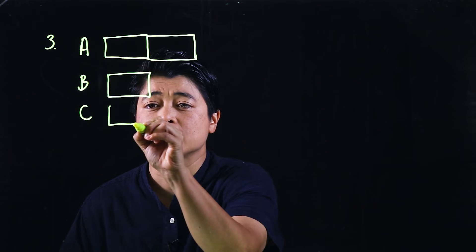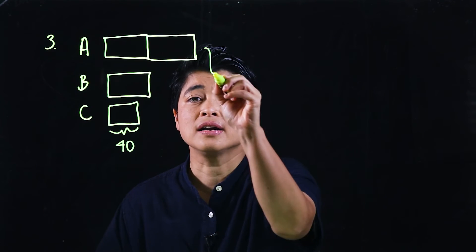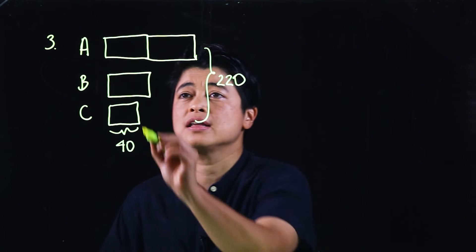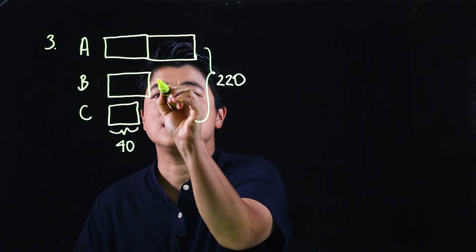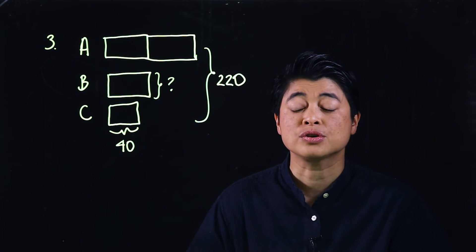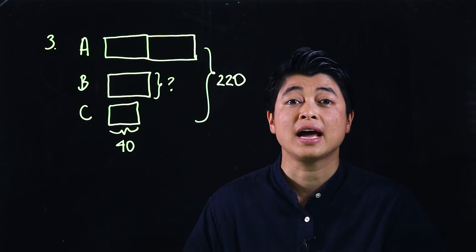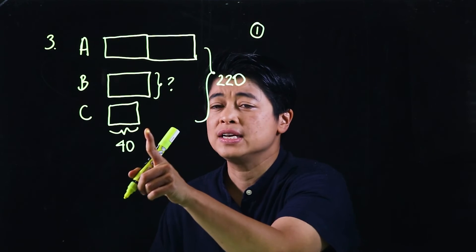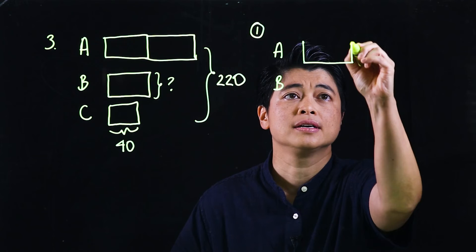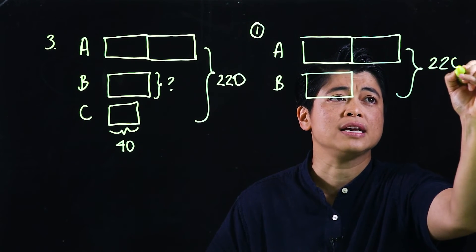In the bar model, Clara's bar represents 40 stickers, and together all three total 220 stickers. The question mark represents how many Brian had. Step one is to remove Clara from the picture — so we subtract: 220 − 40.